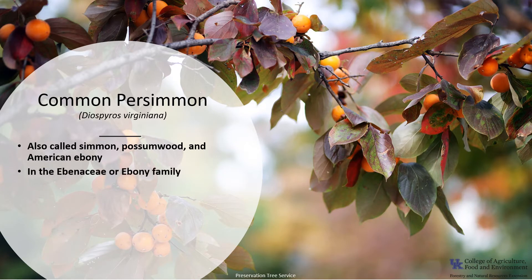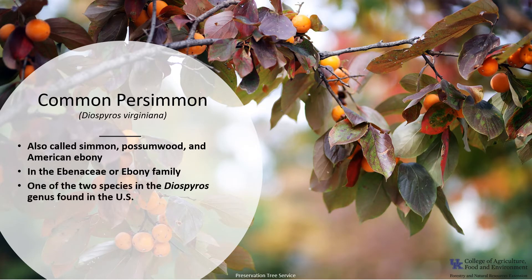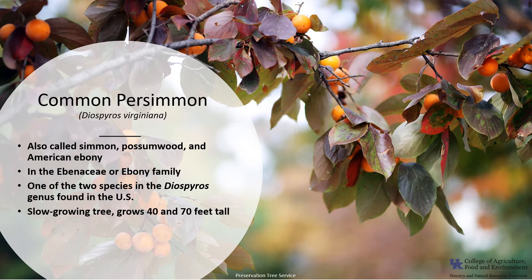Persimmon is in the Ebenaceae, or ebony family, with most of the genera found in tropical and warmer forested regions. The common persimmon is one of the two species in the Diospyros genus found in the United States. It is a deciduous, slow-growing tree that typically grows between 40 and 70 feet tall.